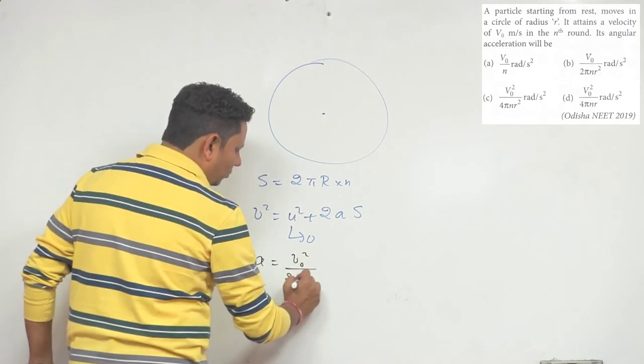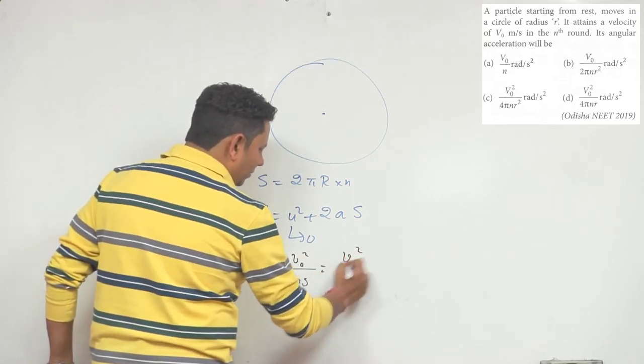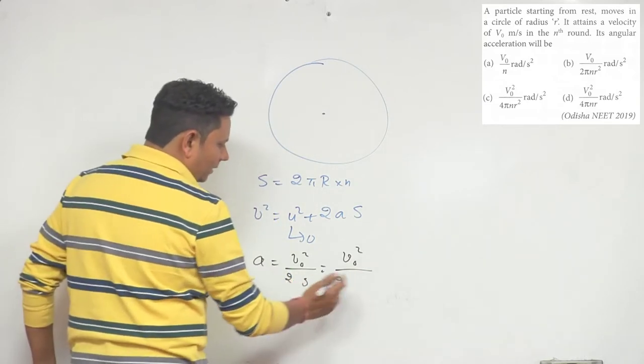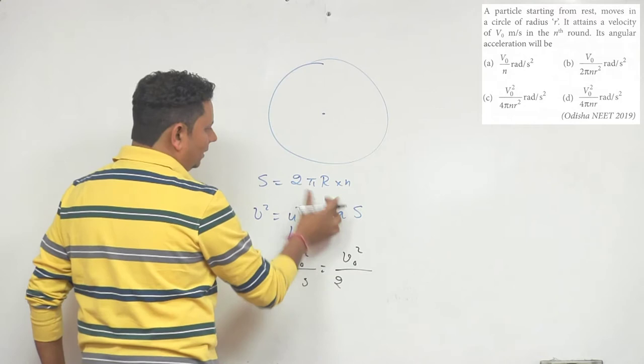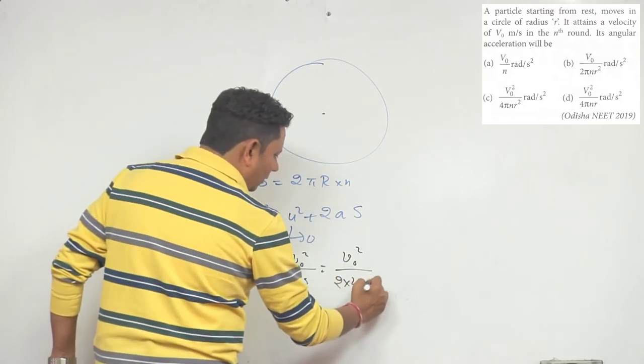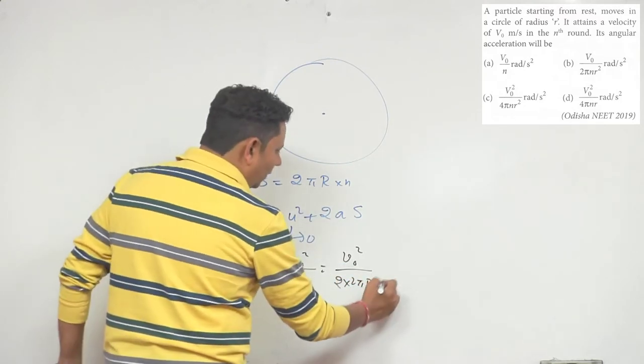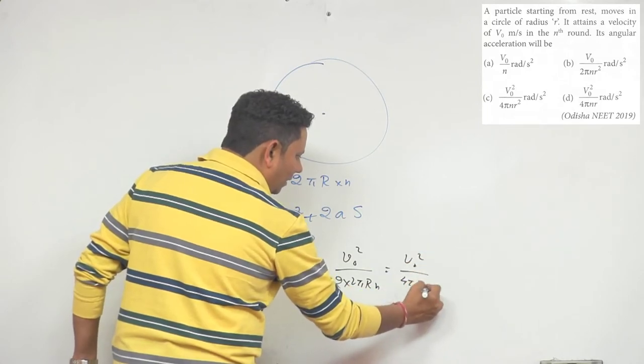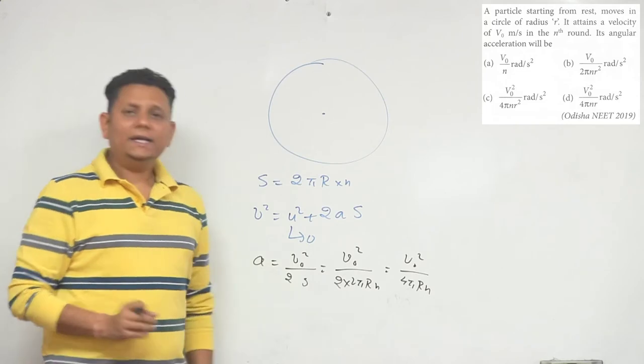The s value will be 2πr multiplied by n. So solving this, we get v0² divided by 4πrn. Now this value is the linear acceleration.